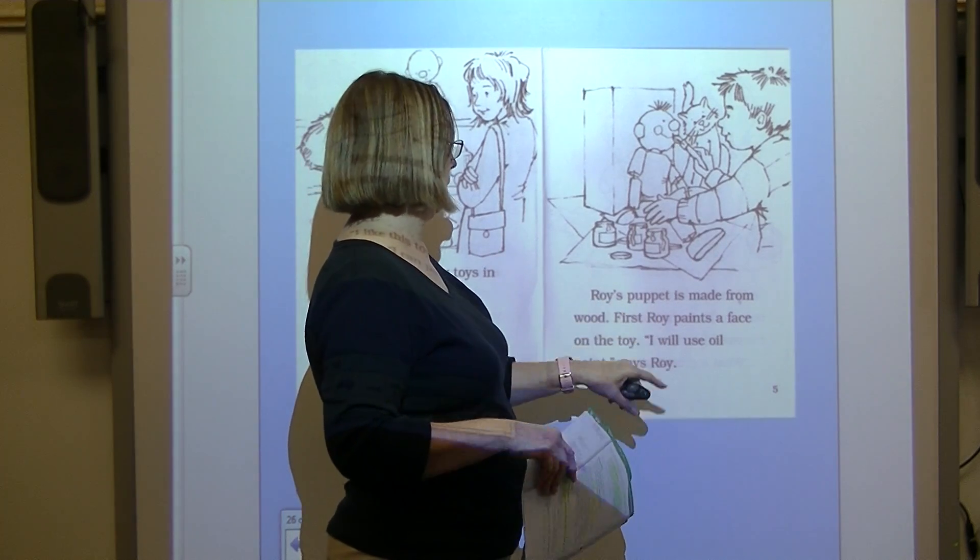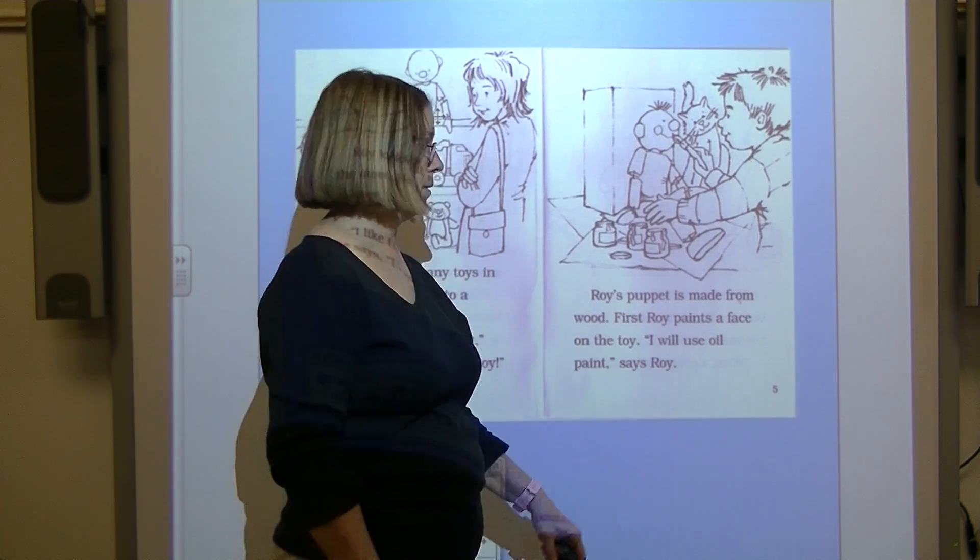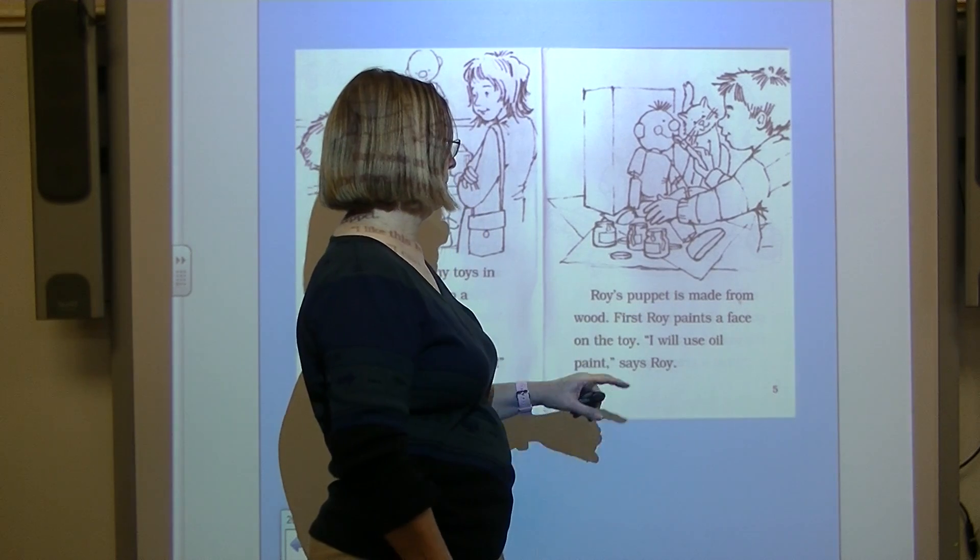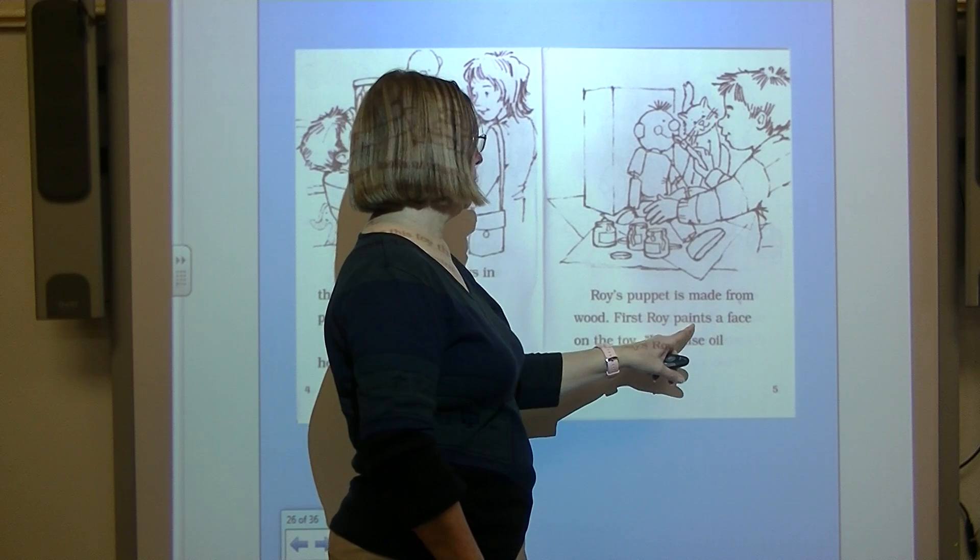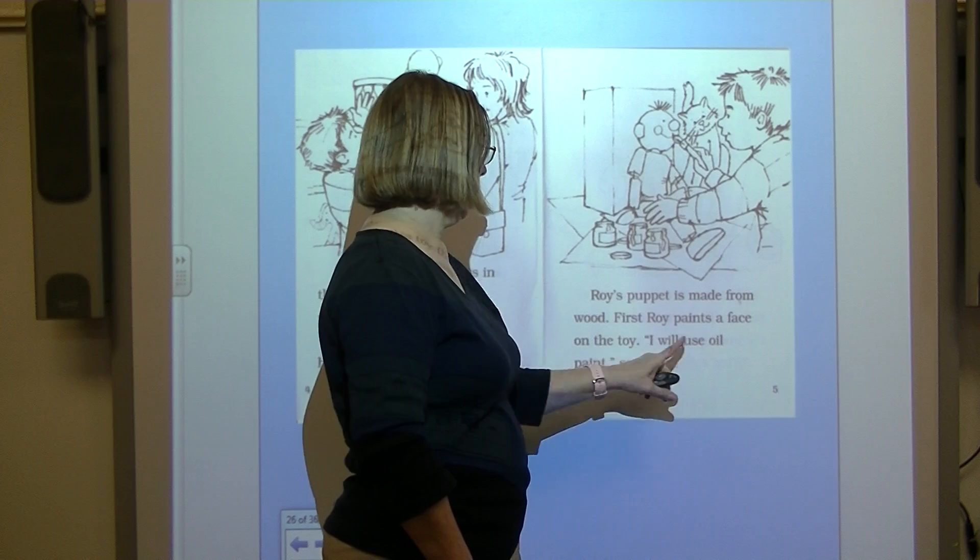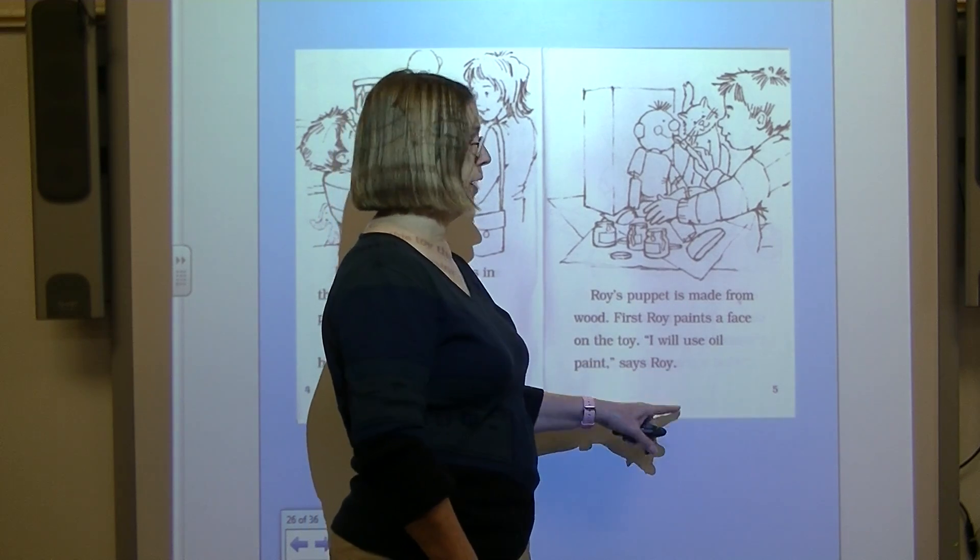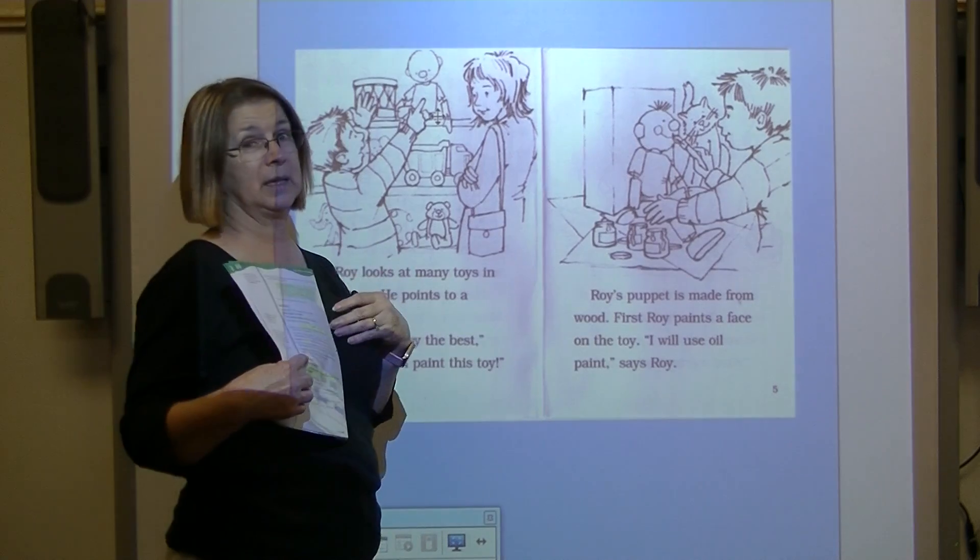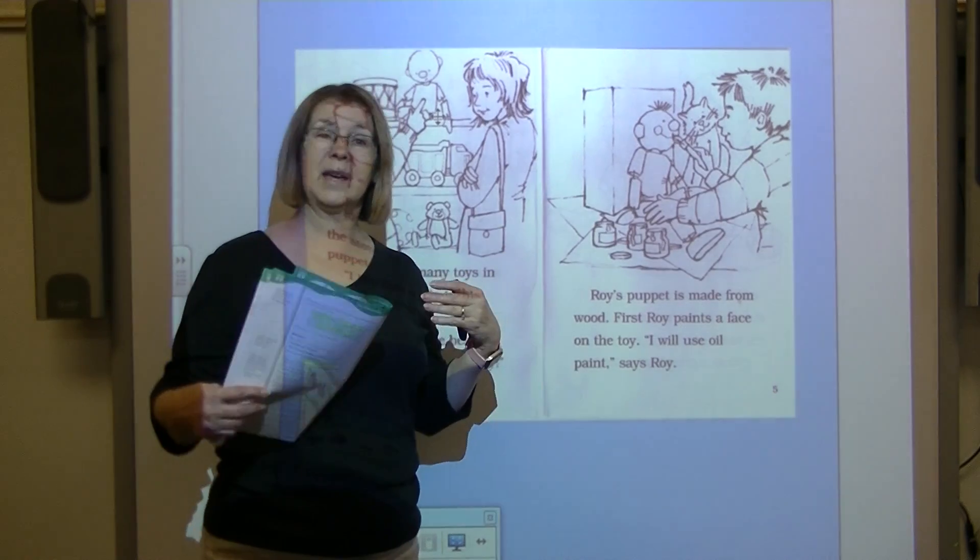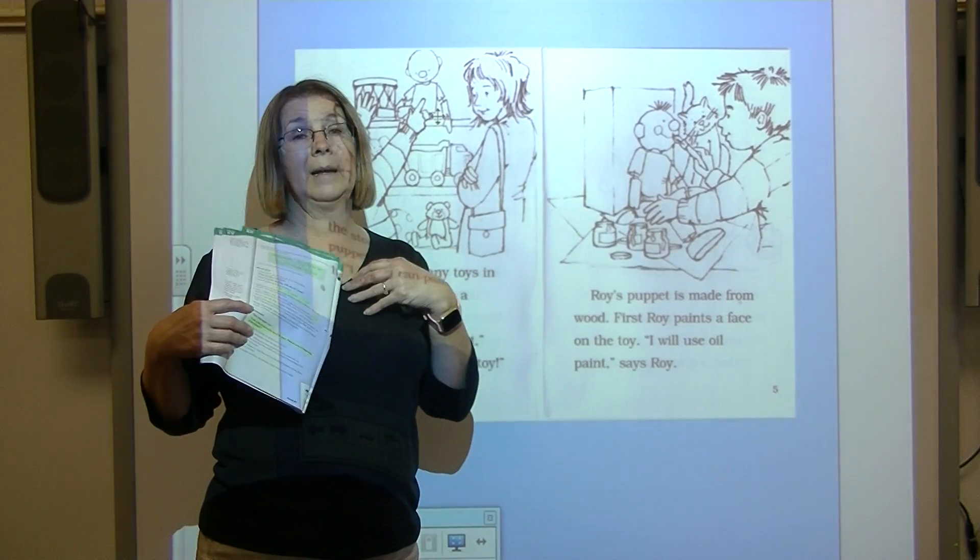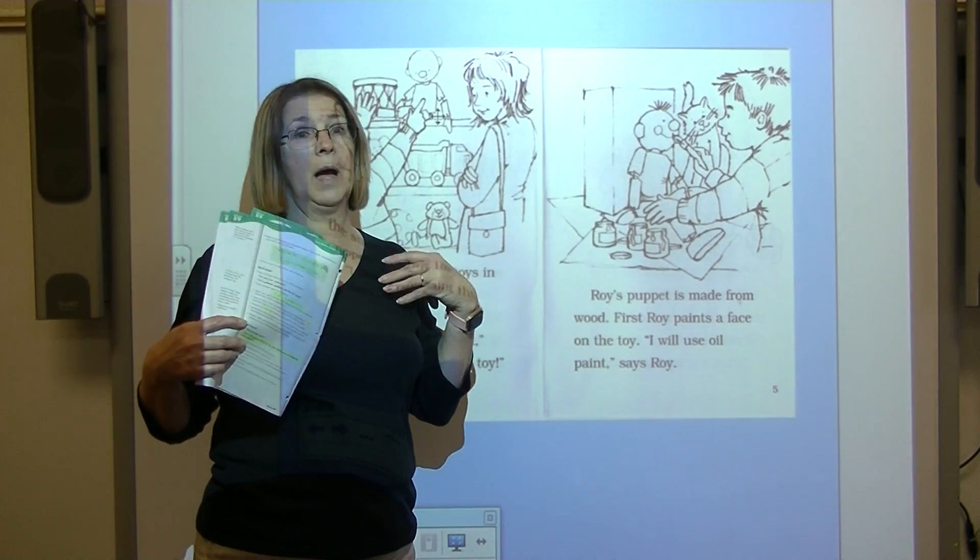Roy's puppet. Look, I didn't even know this. Roy's puppet is made from wood. First, Roy paints a face on the toy. I will use oil paint, says Roy. See, when I was over here reading, I was thinking about the puppets that I have. So I was trying to make a connection to things that I know. Things that are in my world.